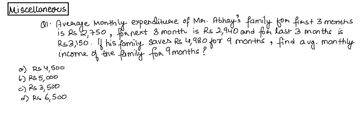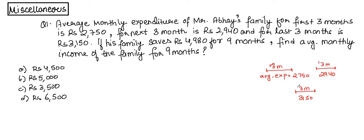For the first three months, the average expenditure — not the total — is rupees 2750. For the next three months, the average expenditure is rupees 2940, and for the last three months it is 3150, covering a total of nine months. If the family is saving rupees 4980 over nine months, we have to find the average monthly income.